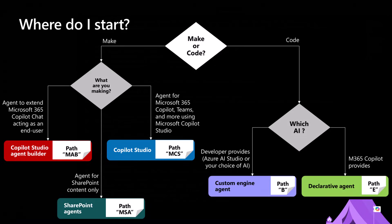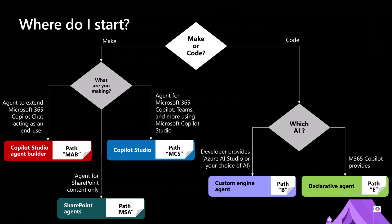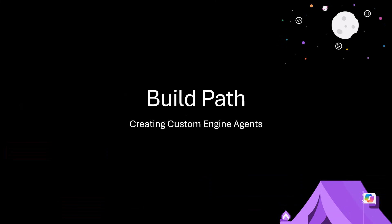Last but not least, if you want to create an agent that relies on a custom foundational model or a custom orchestration model and will be completely customized, that's what you want to do when you create a custom engine agent — that's the Build path, Path B. Let's dig into that one as well.